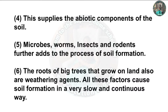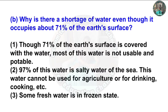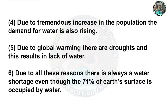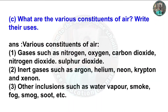Question 6(b): Why is there a shortage of water even though it occupies about 71 percent of the earth's surface? Answer: Though 71 percent of the earth's surface is covered with water, most of this water is not usable or potable. 97 percent of the water is salty seawater, which cannot be used for agriculture or drinking. Some water is in the frozen state. Due to tremendous increase in population, demand for water is rising. Due to global warming, there are droughts, resulting in a lack of water. For all these reasons, there is always a water shortage.